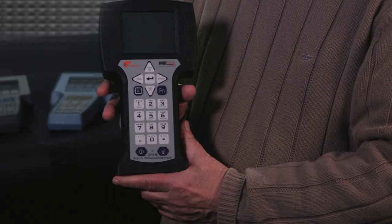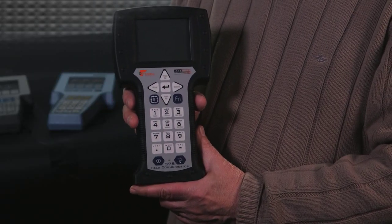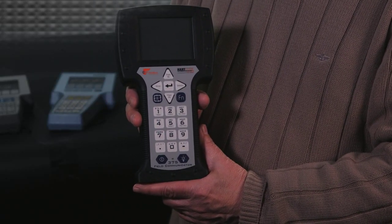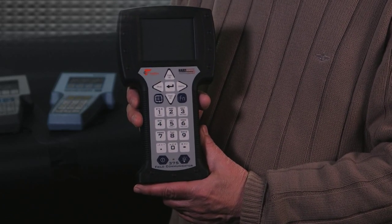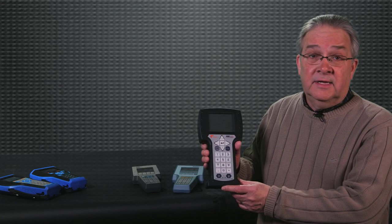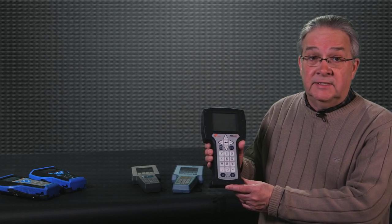In 2003 the 375 field communicator was introduced and this built on the success of the 275 and added the ability for the customer to do updates to the communicator itself as well as the ability to communicate with Foundation Fieldbus devices.